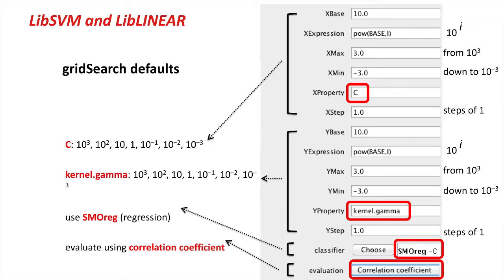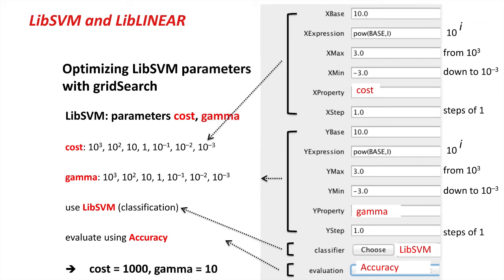Then the first six boxes are talking about x of the grid, and the next six boxes about y. The property being optimized, the x property being optimized, is called c, and that's going from 10 cubed down to 10 to the minus 3 in multiplicative steps of 10. That's what those first six parameters signify. The second six parameters give the same range with the y property of kernel.gamma. That's for SMOreg. If we want to use lib-svm, we need to change some things. We're going to optimize the properties cost and gamma. We're going to choose the classifier lib-svm, and we're going to evaluate using accuracy.